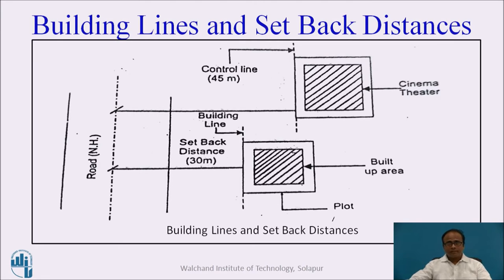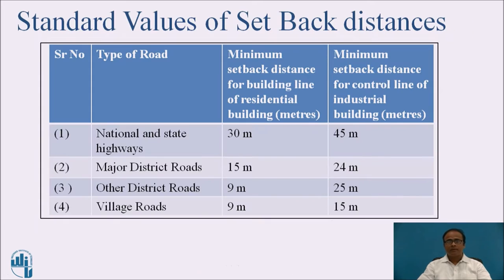Setback distance is more for industrial buildings and less for residential buildings. There are some standard values of setback distances depending upon the type of road. For national and state highways: residential building minimum setback is 30 meters, industrial building is 45 meters. For major district roads: residential is 15 meters, industrial is 24 meters. For other district roads: residential is 9 meters, industrial is 25 meters. For village roads: residential is 9 meters, industrial is 15 meters.